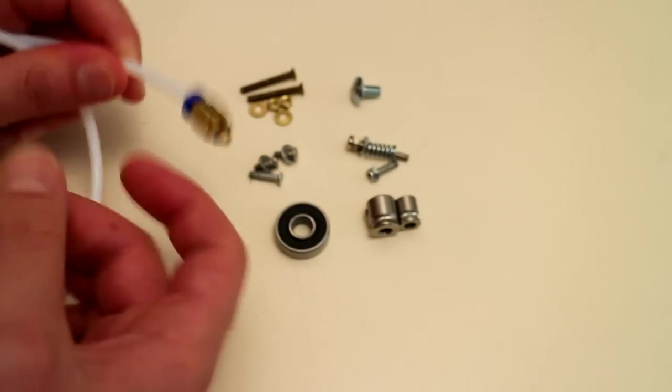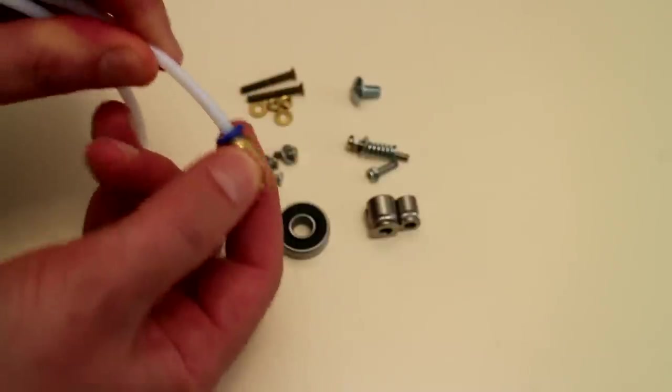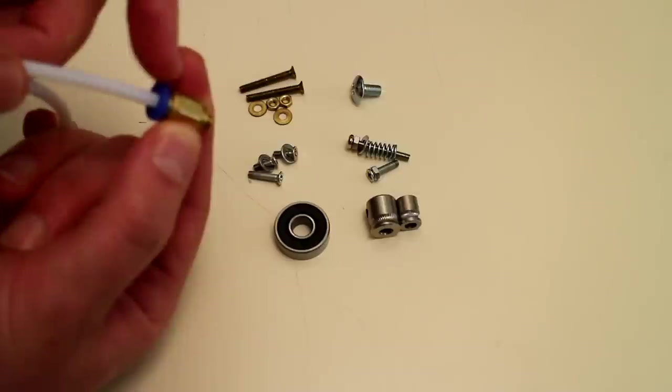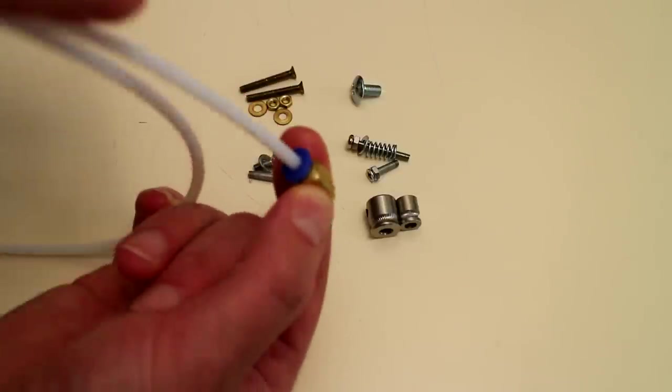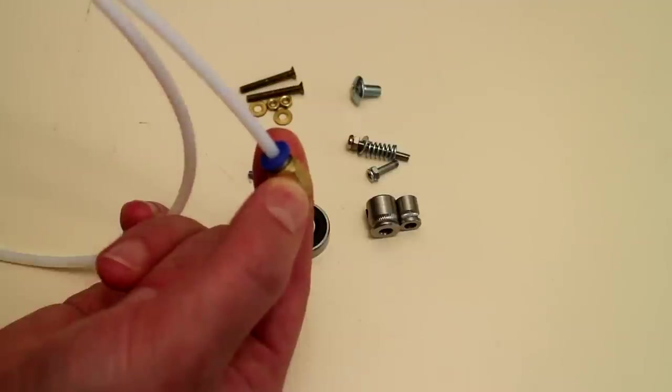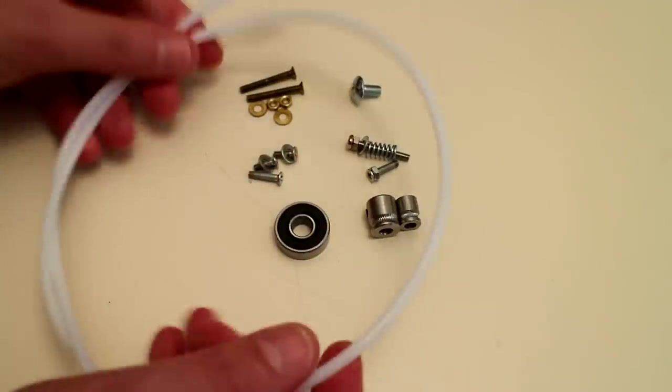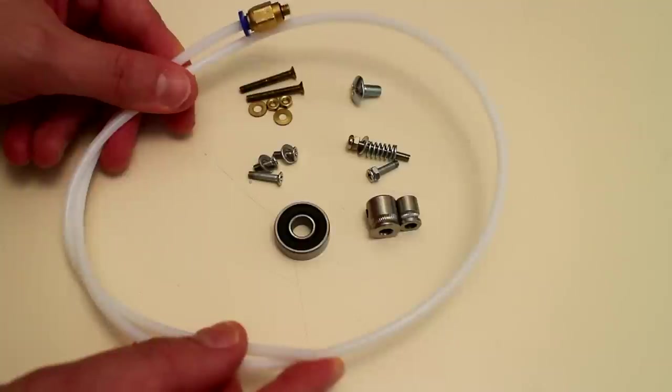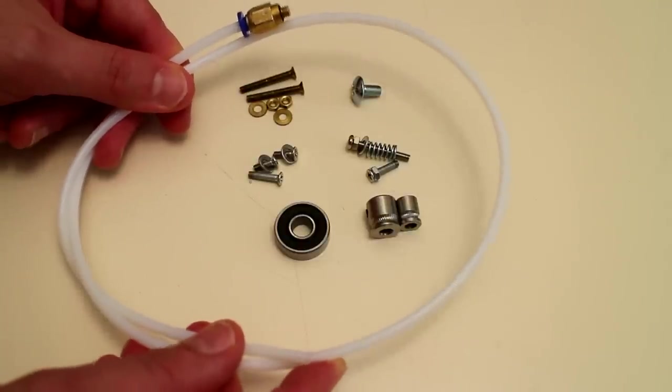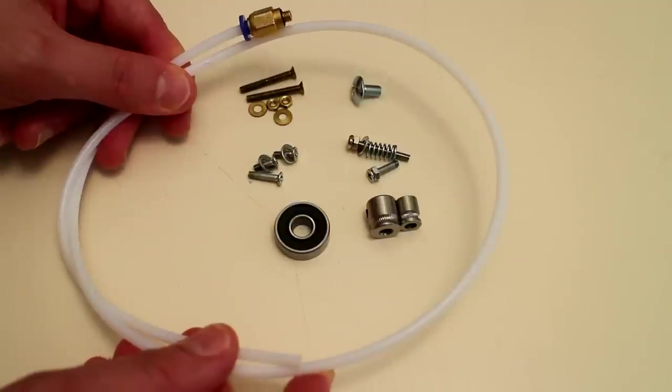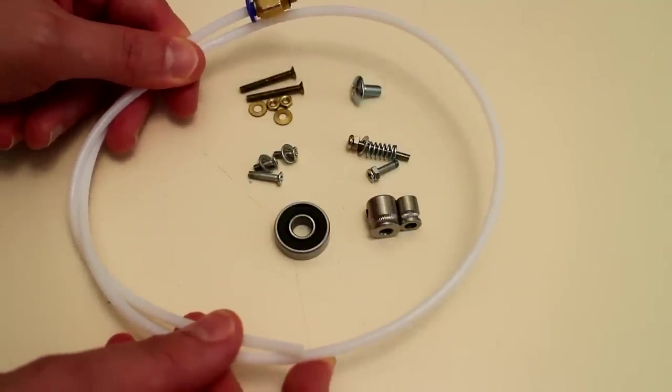That connects to a push fit connector, a PTFE push fit connector, so we have a locking ring here where the tube simply pushes into and locks in. The length that I'm using here is about 70 cm, but this is probably a little bit too long. You could easily get away with 50 or even 40 cm.